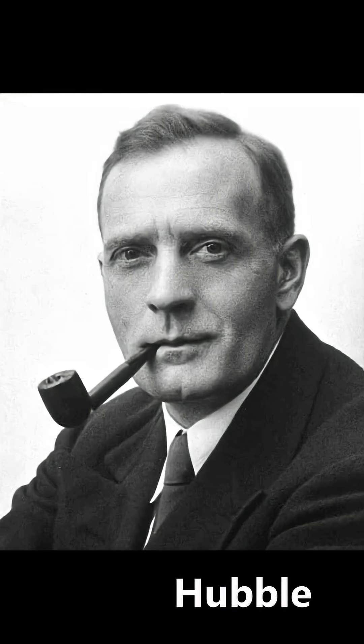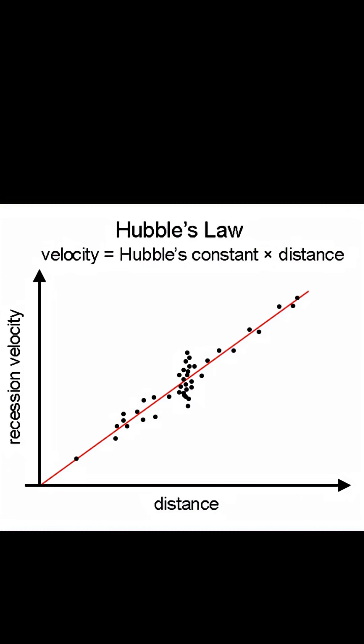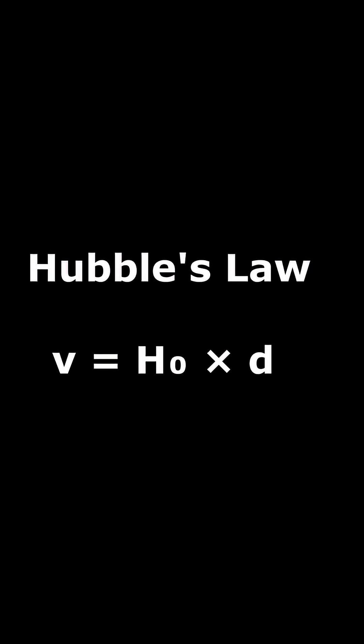In the 1920s, Edwin Hubble discovered the farther a galaxy is, the faster it recedes. V equals HO times d. That's the Hubble law, the universe's speedometer.